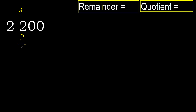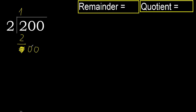Subtract 0. Next, eliminate 0 on this side. 0 is less, therefore next. Bring down 0, eliminate 0 on this side.